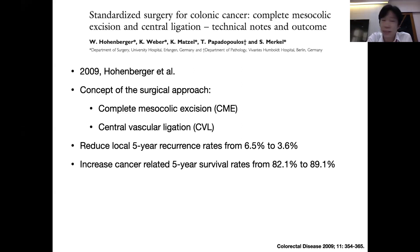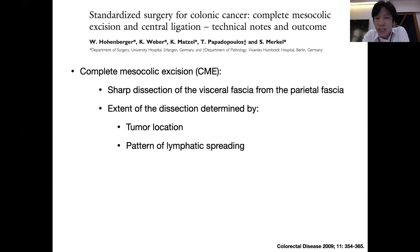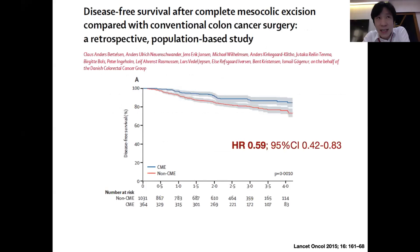This concept was proposed by Hohenberger back in 2009. They reported a reduction in five-year local recurrence from 6% down to 3%, and an increase in five-year cancer-related survival of almost 10%. For complete mesocolic excision, they described this technique by sharp dissection between the visceral fascia and parietal fascia of the colon and the coronary mesentery. The aim of this technique is to keep the intact mesentery integrity, and the extent of dissection is determined by the tumor location and pattern of lymphatic spreading.